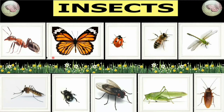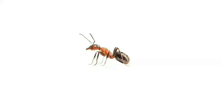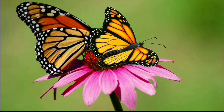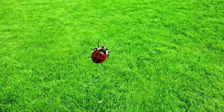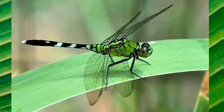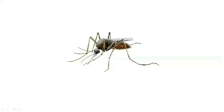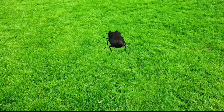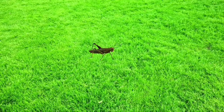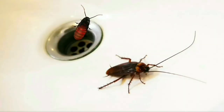Let us repeat the names of these insects from the beginning: ant, butterfly, ladybird, honeybee, dragonfly, mosquito, beetle, housefly, grasshopper, cockroach.